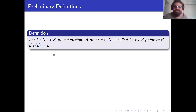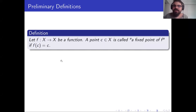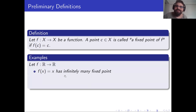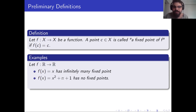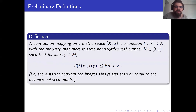Let's start with definitions. If a function maps a point to itself, we call that point a fixed point of f. That is, if f(c) = c, then c is a fixed point of f. For example, the identity mapping has infinitely many fixed points, but this polynomial has no fixed point.